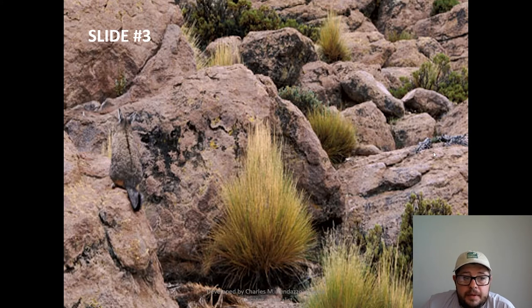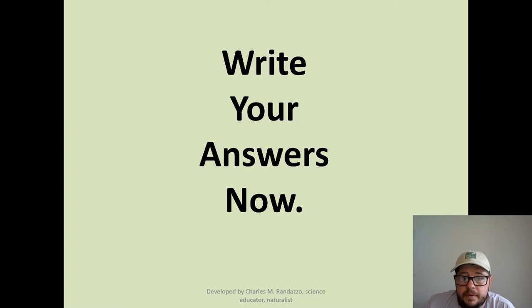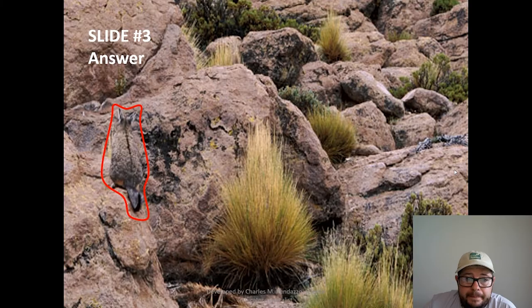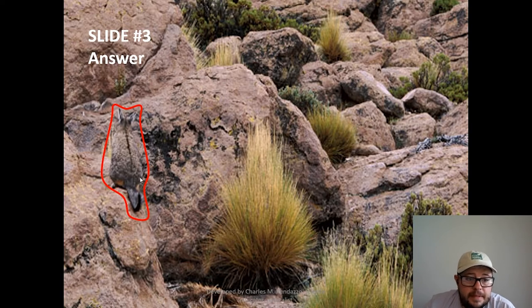Slide three. What do you see? Write your answer or talk about it. What did you find? A rodent — you can see his tail and his ears.